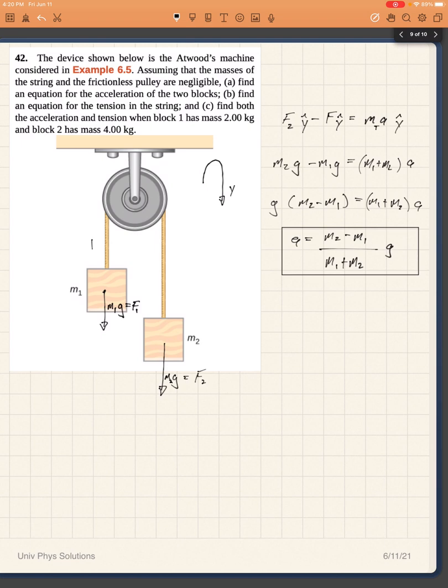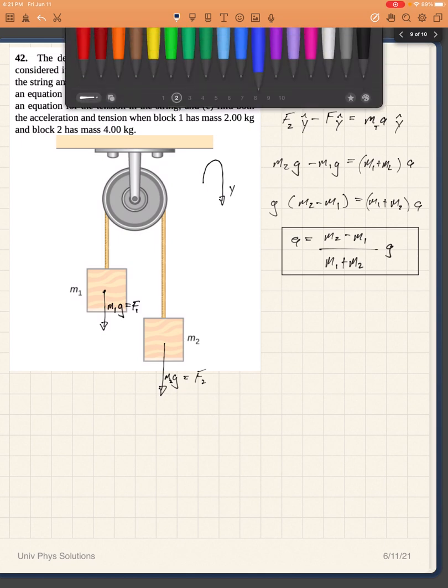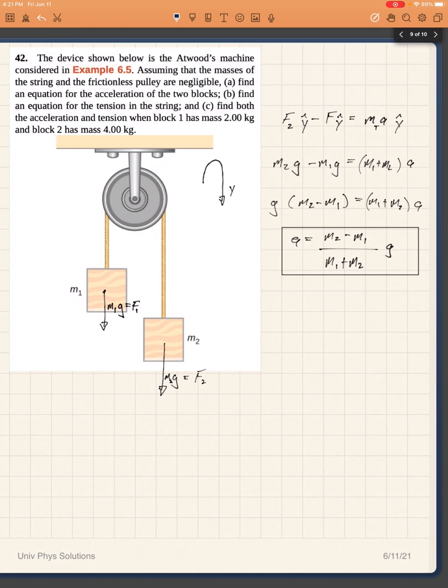So I can just look at one of the masses, and so for instance if I look at mass 2, here is mass 2. In this direction I have the tension and in this direction I have the weight. So my equation for the acceleration of M2 would be M2G.